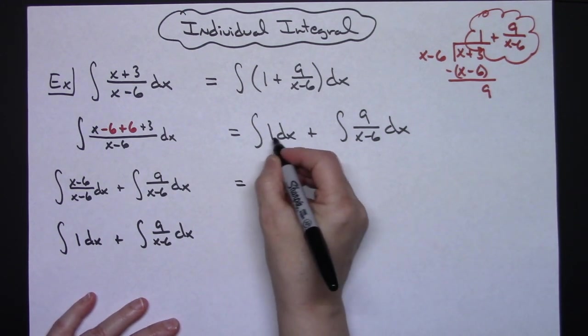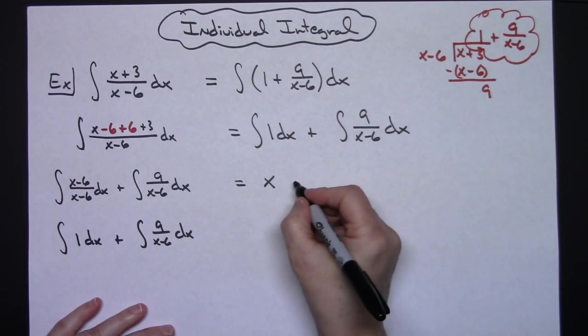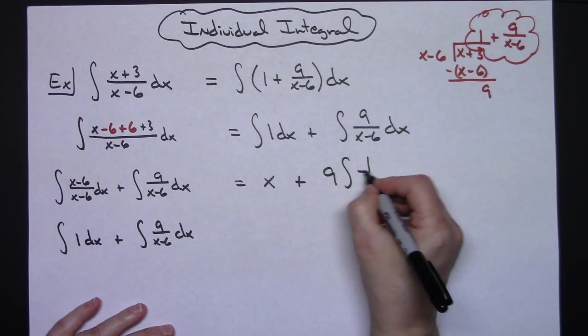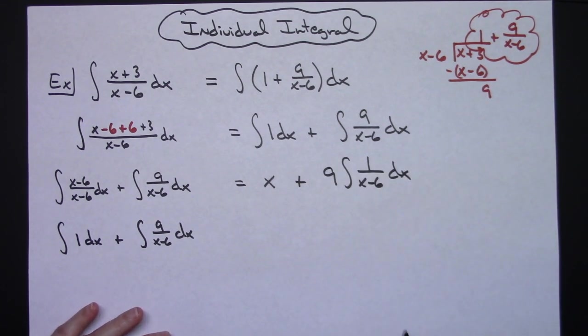Integrating that 1 with that dx is just going to give me an x there. If I pull the 9 out then I've got a 1 over an x-6 dx.